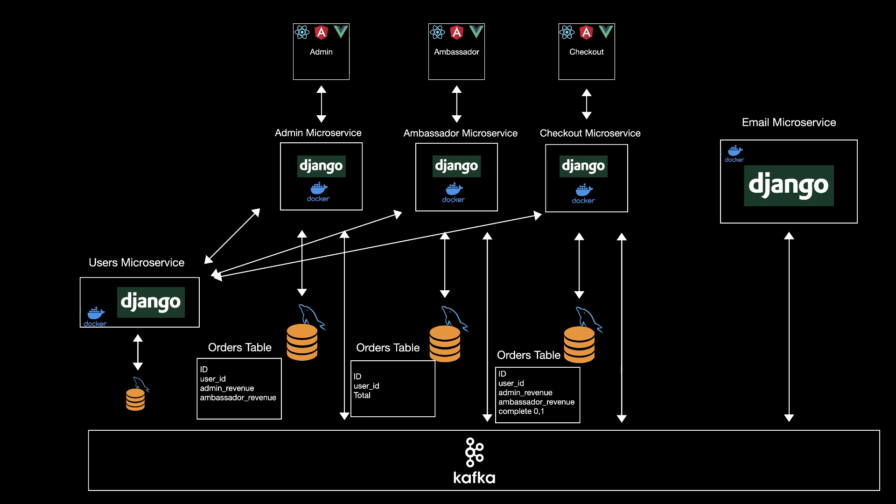All the columns in the orders table will be available on the checkout microservice. When an order is created, it will have a completed field — zero or one — indicating if it failed or completed. In the admin microservice it will have most of those fields, but not the completed field, since it stores only completed orders, meaning it has one less column and less data. The ambassador microservice has even fewer columns, since for the orders table it needs only the total for the ambassador and doesn't need all the other columns. So each microservice can save the data as it needs it.